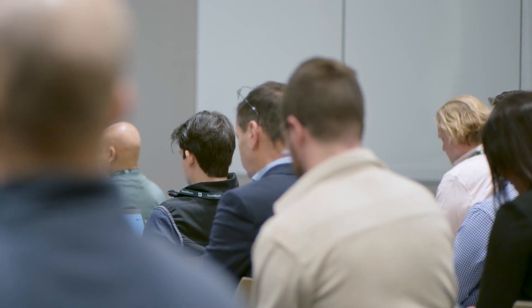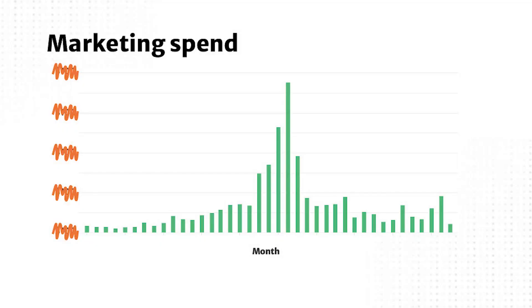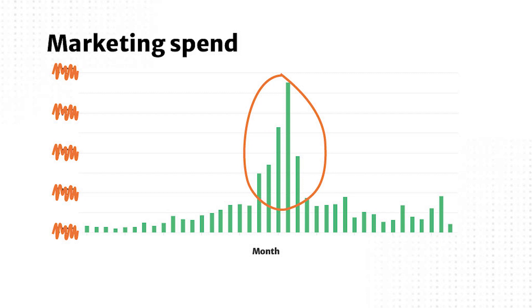For some people this is actually the bigger problem. One of the famous growth VPs from Facebook basically said the bigger problem startups have isn't necessarily finding these things, but identifying when they actually have product market fit rather than saying we had early signs of something and thinking that's good enough — and then scaling when you're actually not where you think you are. To use another Mode example, this is an actual graph of our marketing spend, anonymized by month. You can see the problem: this giant green mountain of wasted money. This was the time Josh said things don't look so good. We thought we had found product market fit and hadn't.